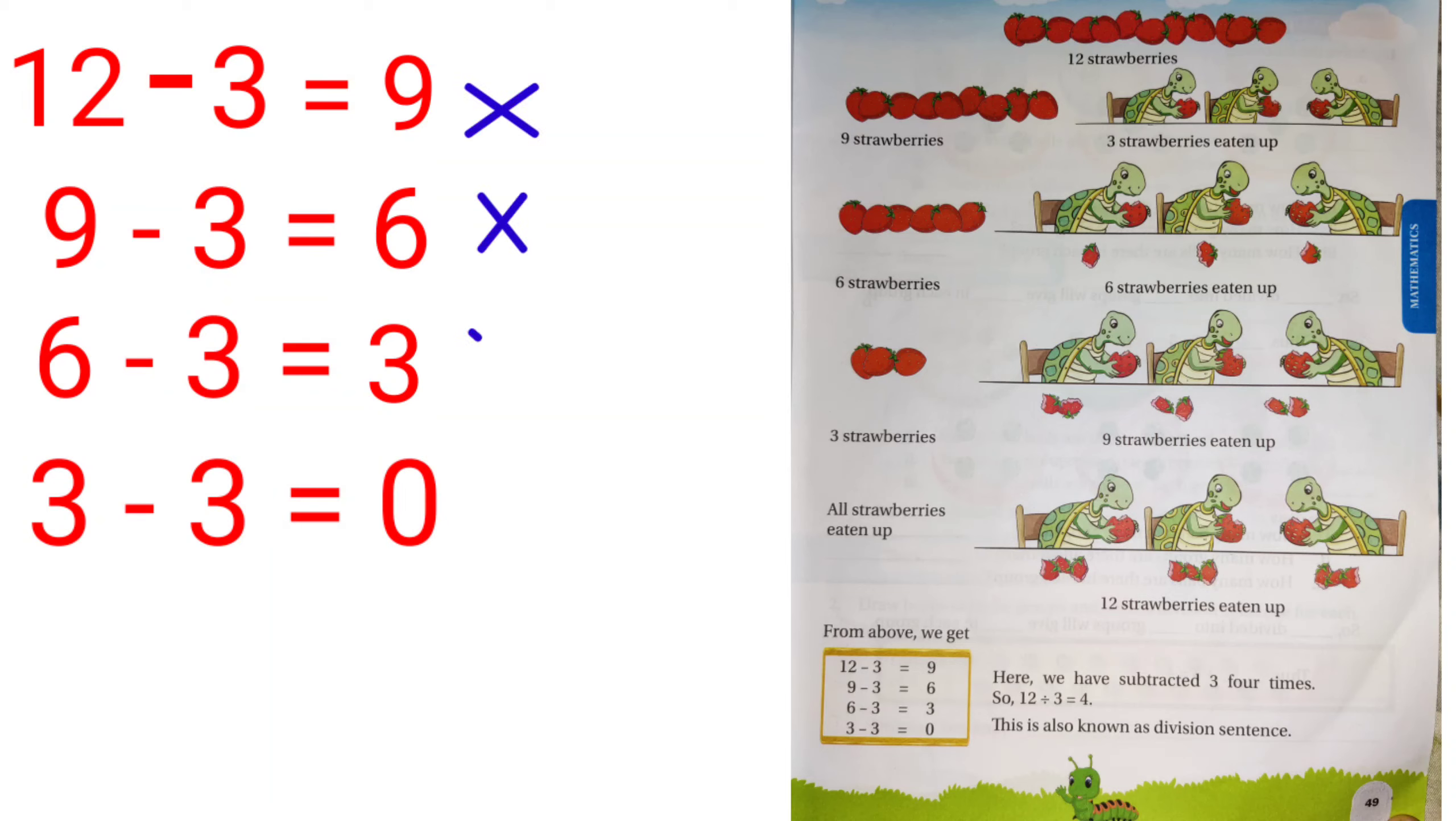That is 1, 2, 3, 4. So, we can say that 12 divided by 3 equal to 4. And this is called what? Division sentence.